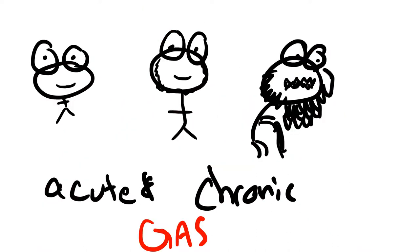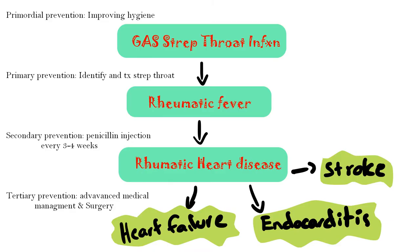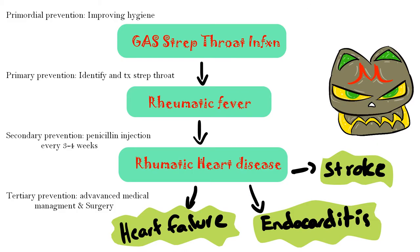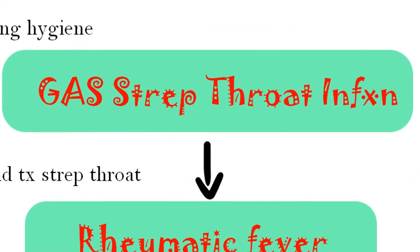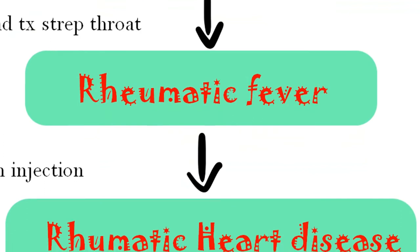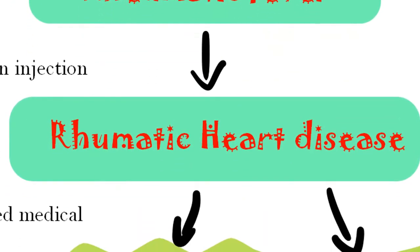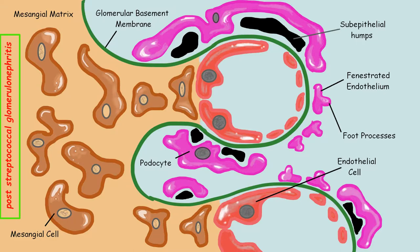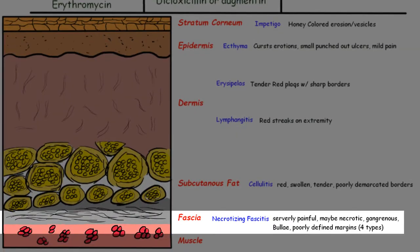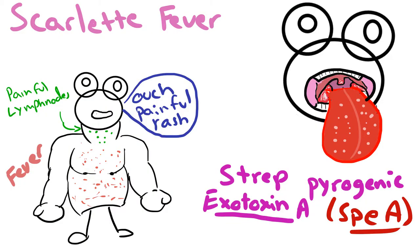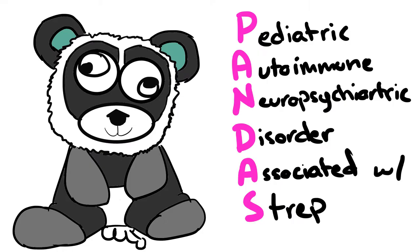GAS affects pretty much all age groups and causes both acute and chronic infections. The main things to worry about for GAS, aka Streptococcus pyogenes, are pharyngitis (strep throat), rheumatic fever, rheumatic heart disease, post-streptococcal glomerulonephritis, impetigo, necrotizing fasciitis, scarlet fever, pandas, and cellulitis.